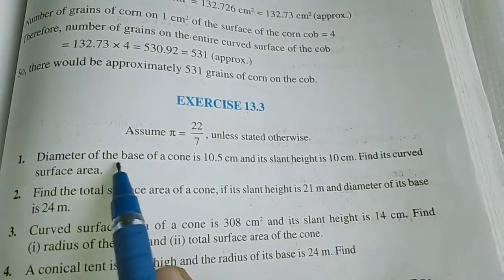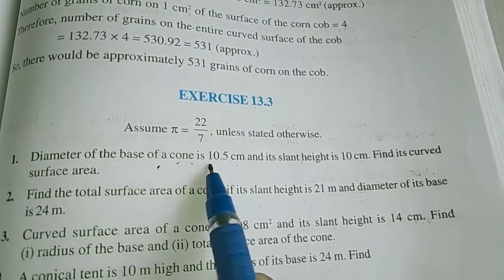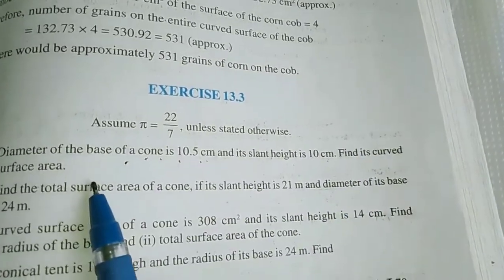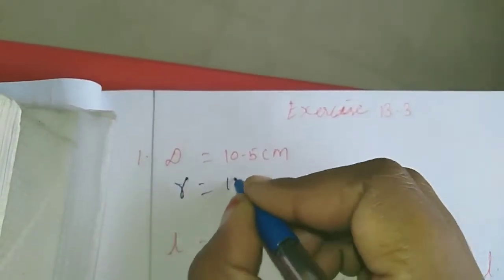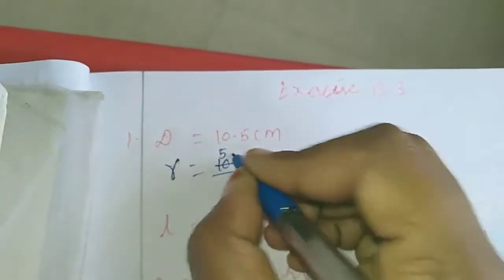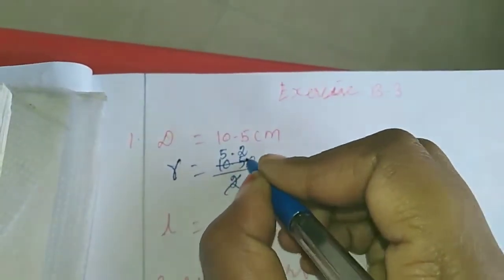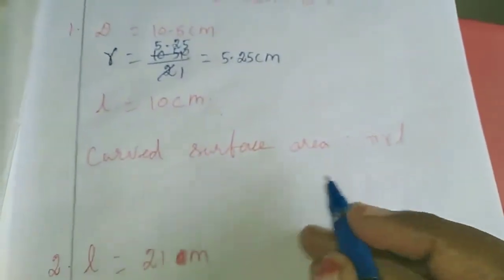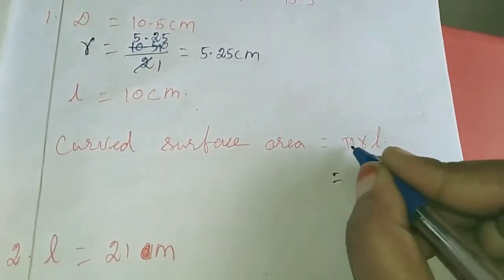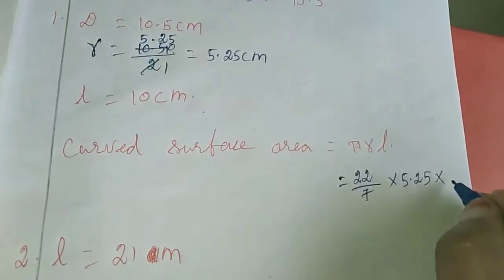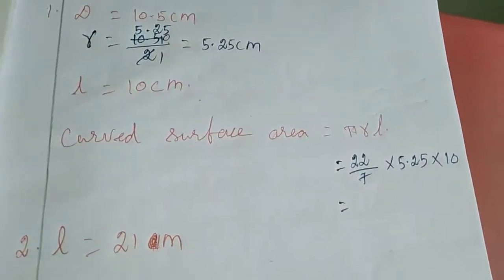Exercise 13.3, first sum. Diameter of the base of a cone is 10.5 cm and its slant height is 10 cm, that is l is 10 cm. Find its curved surface area. D equals 10.5 cm, so r equals 10.5 divided by 2, which is 5.25 cm. This is r. l value we have. Curved surface area formula is pi r l, so 22 by 7 into 5.25 into 10. Simplify this — this is homework for you.